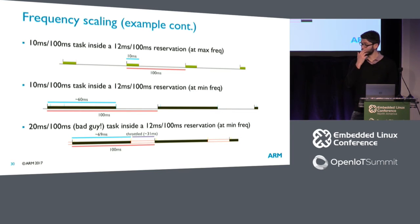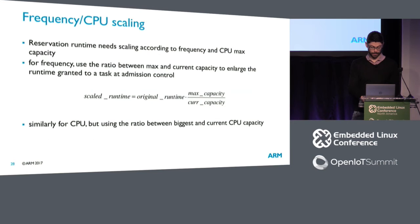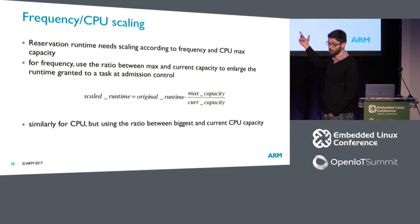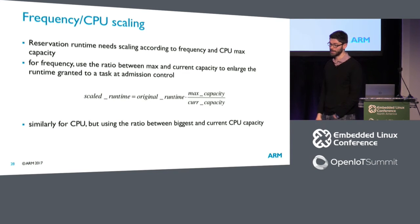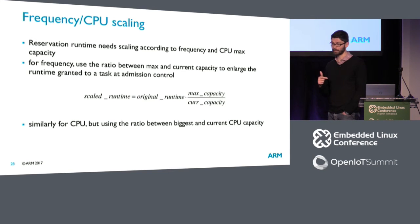For big.LITTLE systems, you apply the same formula but also consider the max capacity of the two CPU types — you scale twice: once for frequency, and then again comparing the max capacity of all CPUs to the max capacity of the CPU you are currently executing on. This is essentially the same solution used in per-entity load tracking scaling in the CFS scheduler.